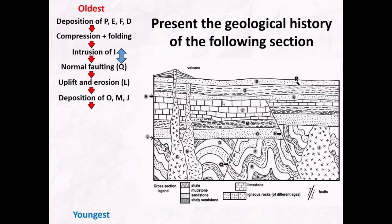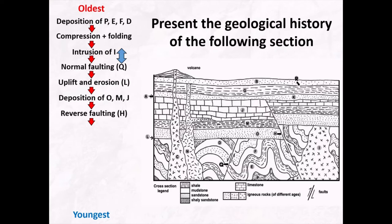The next thing that must have happened is we've had this reverse faulting through H. The erosional surface A can't have happened before fault H, because you'd expect that unconformable surface to have been faulted. So the next thing must have been compression forming reverse fault H. Then that reverse fault H and all of the beds older than it have been uplifted and eroded to give us this unconformable surface. I think this is a paraconformity because the beds either side are still at the same angle, but nevertheless it's an unconformity — a plane that signifies a good deal of erosion.